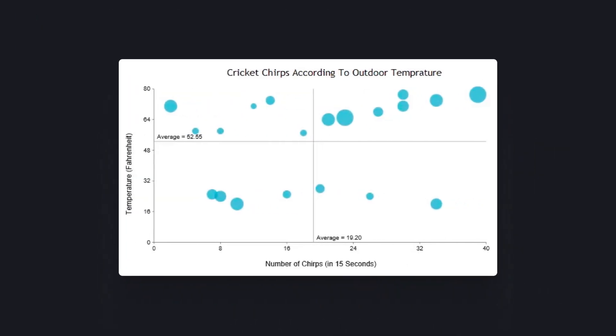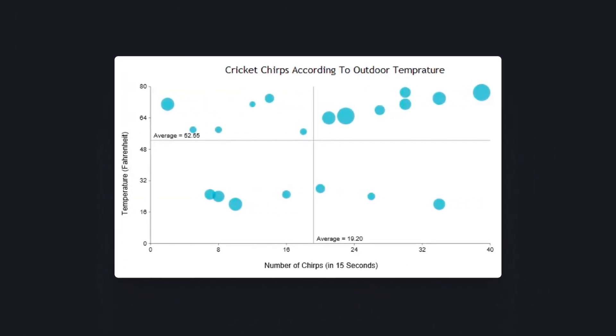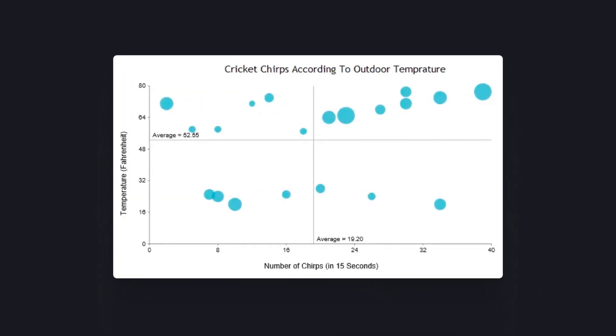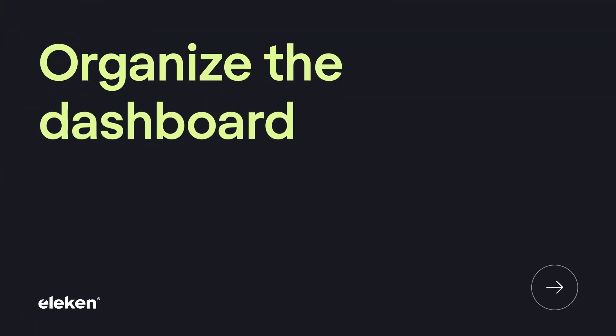And our final one is a bubble chart to show how several quantitative variables relate to each other. Now that we've got all that covered, let's go over our final point — organizing the dashboard. All you have to do is put things in the right order.